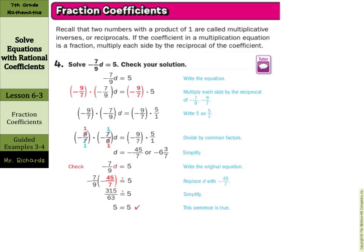Our last guided example: negative seven-ninths d equals five, and check. Multiply by the negative reciprocal, which becomes positive one d. Rewriting the whole number five as five over one, nine times five is forty-five, seven times one is seven, with the negative attached — simplified to negative six and three-sevenths.